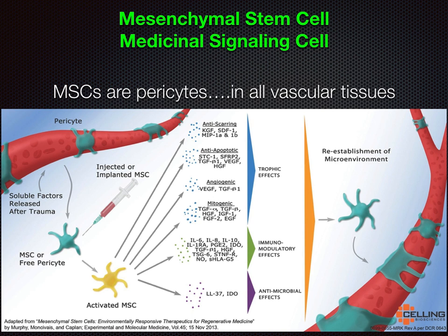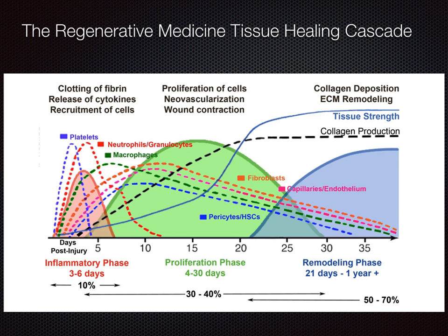What we see here is a graphic demonstrating the regenerative medicine tissue healing cascade. We can see many things involved in regenerative techniques that are active at different phases. Platelets, neutrophils, granulocytes, and macrophages are all active early post-injury in the first five to ten days. After the initial inflammatory phase, there is a longer proliferation phase lasting from four to thirty days, during which we see the rise in hematopoietic stem cells, new vascularity, fibroblastic activity, and the beginnings of increased tissue strength. The longer-lasting remodeling phase starts at about 21 days post-injury and goes on for years or more.